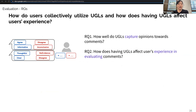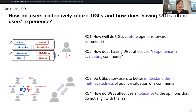To understand how users collectively utilize UGLs and how having UGLs affects users' experience, we conducted a user study. We asked how well UGLs capture opinions toward comments, and how having UGLs affects users' experience in evaluating comments. We also explored secondary effects: whether UGLs allow users to better understand the multifacetedness of public evaluation, and whether UGLs affect users' tolerance toward opinions that do not align with theirs.